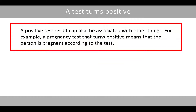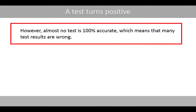A positive test result can also be associated with other things. For example, a pregnancy test that turns positive means that the person is pregnant according to the test. However, almost no test is 100% accurate, which means that many test results are wrong.